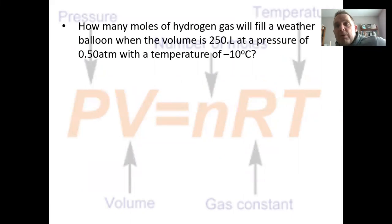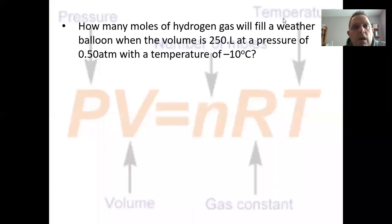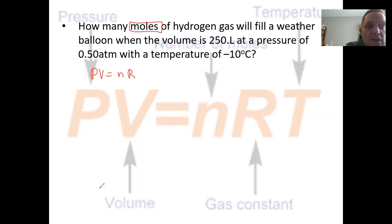Alright, let's apply our knowledge to these questions. Question number one in our notes. It states, how many moles, that's important, we want to know moles, of hydrogen gas will fill a weather balloon when the volume is 250 liters, at a pressure of 0.50 atm, with a temperature of minus 10 degrees Celsius. The key is moles. I know that PV equals nRT, and n is the number of moles. That's what I'm going to try to find.